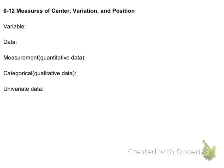Algebra 1, this is 0-12, measures of center, variation, and position. So right off the front here, we have a couple variables that we're not variables. Variable's the first one. A couple definitions that we should go over.